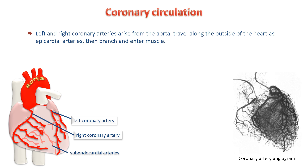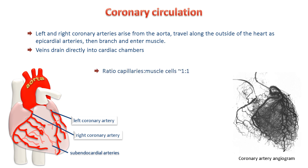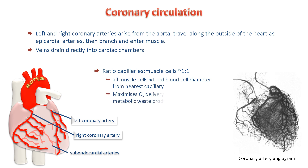From the arteries, blood flows through capillaries, then venules. But as the venules are within the heart tissues, they drain directly into the chambers of the heart. The capillary network in cardiac muscle is particularly dense, reflecting the high oxygen demand of the muscle cells. The consequence is that all the muscle cells are within a distance of about one red blood cell from the nearest capillary. This maximises the delivery of oxygen to the muscle and the removal of metabolic waste.